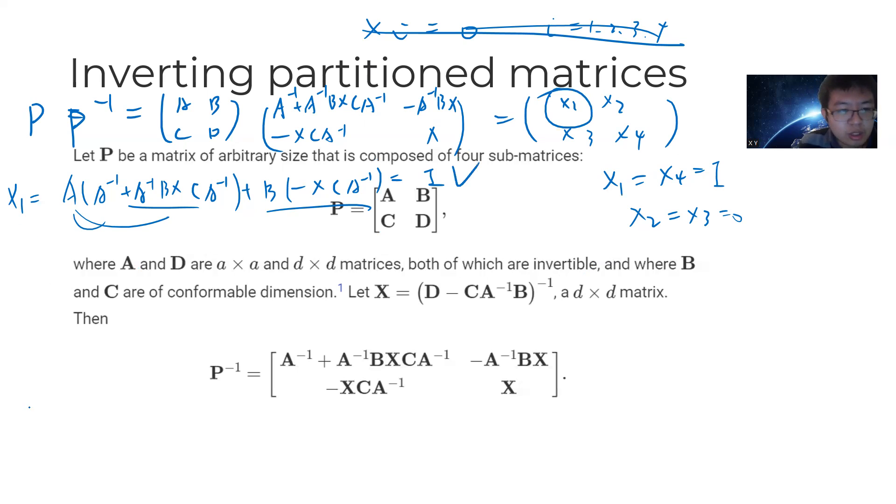So we verified X1. Now let's see X2. X2 is here times here, so it's A inverse B X minus A inverse B X plus B X, which is 0. Trivial.